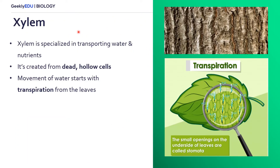Starting with xylem — xylem is a specialized tissue that aims to transport water and other nutrients. Xylem is made from dead cells and hollow cells, and xylem is also what makes tree bark. Xylem has unidirectional movement up the plant, and this movement actually starts with transpiration from the leaves.